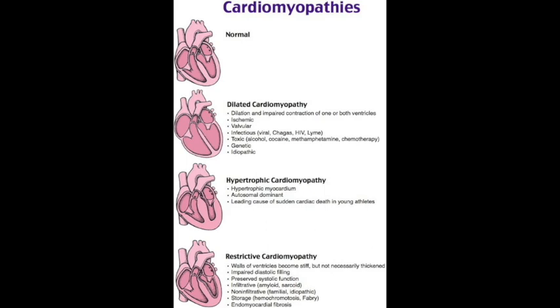Management of dilated cardiomyopathy is standard systolic heart failure management, especially knowing mortality reducers: beta blockers, ACE inhibitors and ARBs, spironolactone, and hydralazine with a nitrate. Symptomatic control with diuretics or digoxin is also used, but remember these do not lower mortality. An AICD (automated implantable cardioverter-defibrillator) can be placed if the ejection fraction is under 35 or 30%.